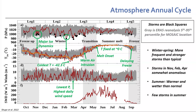The gray shading shows ERA5 data along the MOSAiC drift trajectory, giving climatological context over recent decades. The red line shows smoothed MOSAiC data showing where we fit into that context. In the pressure field, you see black squares marking cyclones that affected us — we had lower pressure than typically expected from ERA5. It was quite a stormy time, especially in wintertime. From a temperature standpoint, we saw some extremely warm events and some extremely cold events — definitely a unique year from a meteorological perspective.